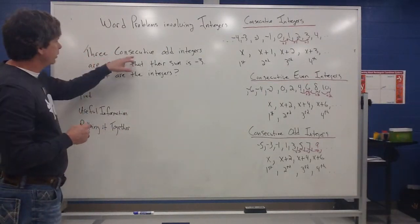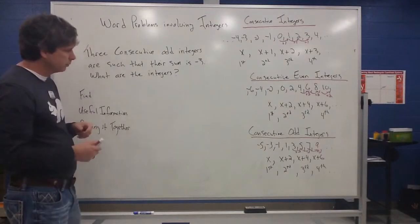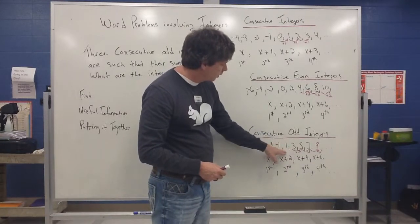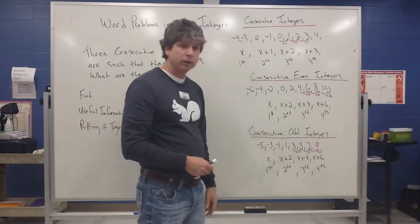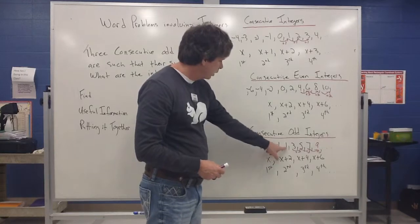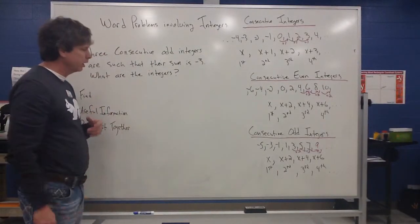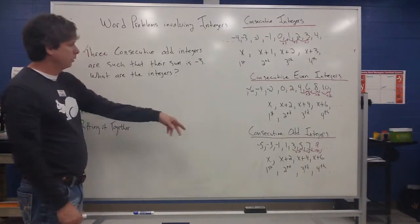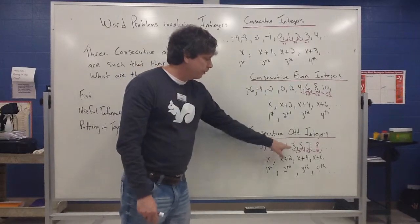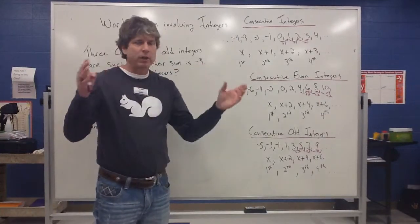Let's look at this problem: three consecutive odd integers are such that their sum is negative 3. What are the integers? Looking at the pattern, negative 3, negative 1, and 1 would be consecutive odd integers — the 1 and negative 1 zero out, leaving negative 3. So without even doing any algebra, you can see those three numbers satisfy the condition: they're consecutive odd integers and their sum is negative 3.